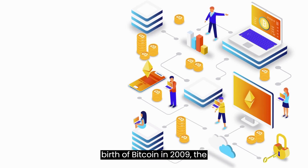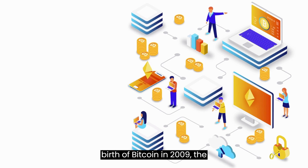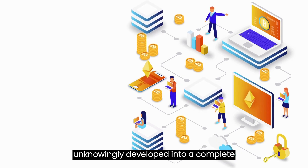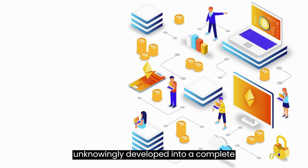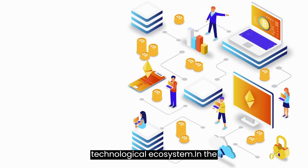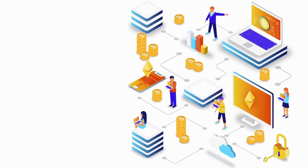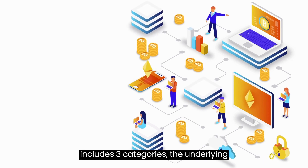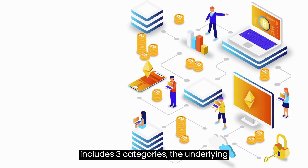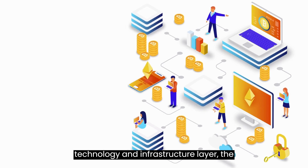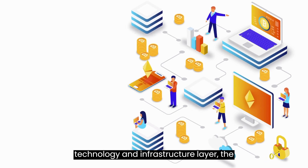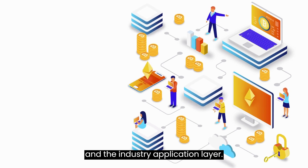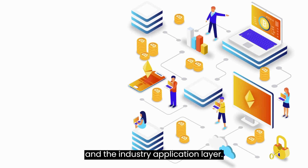Since the birth of Bitcoin in 2009, the accompanying blockchain technology has unknowingly developed into a complete technological ecosystem. In the current blockchain ecology, it mainly includes three categories: the underlying technology and infrastructure layer, the general application and platform layer, and the industry application layer.